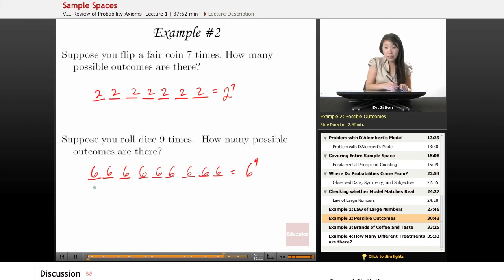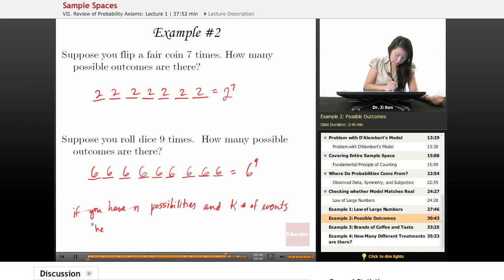So events are the possibilities. If you have n possibilities and k number of events, then total outcome is n to the k power.